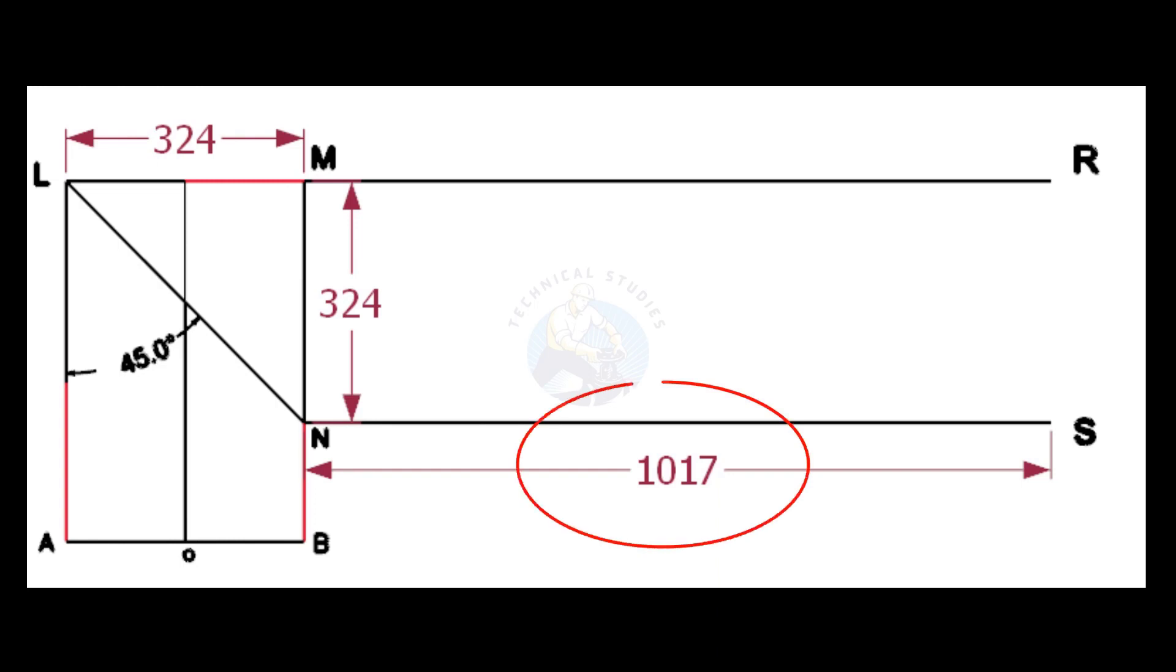We know the circumference of the pipe is 1017 millimeters. Draw the lines MR and NS.